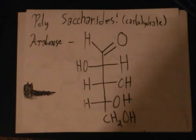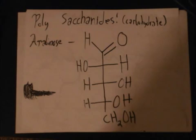One of the main components of coffee by weight are polysaccharides. Polysaccharides are the scientific name for carbohydrates, and are composed of carbon, hydrogen, and oxygen. They are formed from many monosaccharide or disaccharide chains. One of the polysaccharides in coffee is arabinose, which is pictured here. Arabinose's chemical formula is C5H10O5.